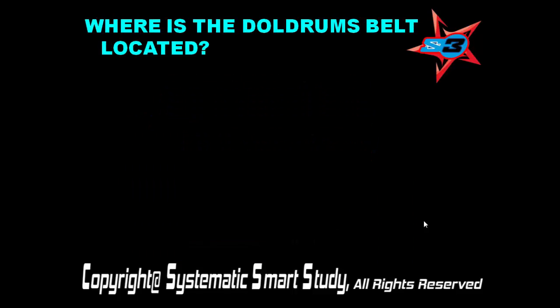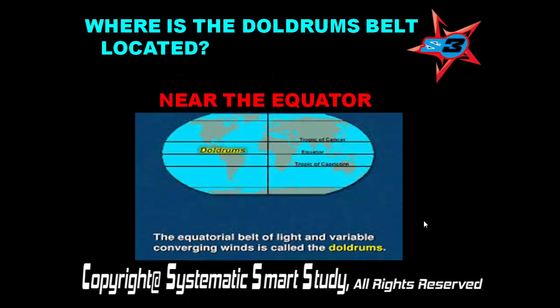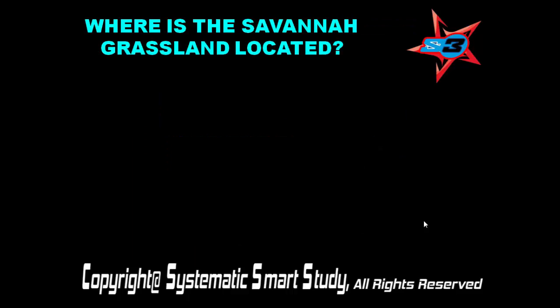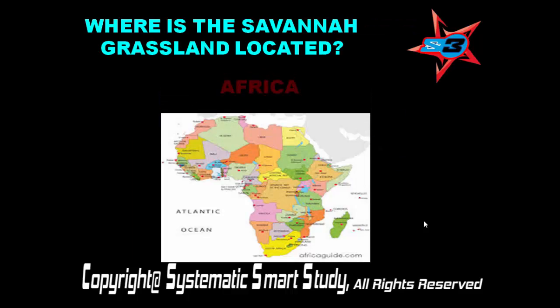Where is the doldrums belt located? Near the equator. Where is the Savannah grassland located? Africa.